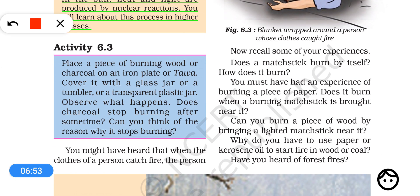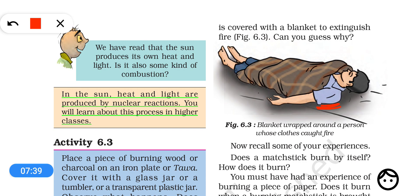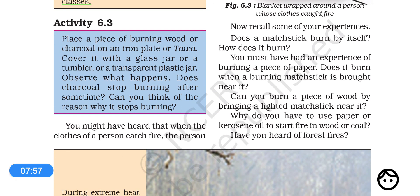From activity 6.2, you can also extinguish burning coal. If you take a piece of coal that is producing a glow, place it on an iron plate, and cover it with a glass jar, after some time the coal stops burning — again because the supply of air is cut. So to stop the fire of something, the best way is to cut the supply of oxygen. This is what we do when a person's clothes catch fire: we cover them with a thick blanket so that the supply of oxygen is stopped and the clothes stop burning.